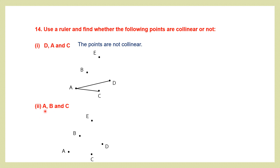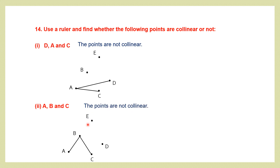Second set — A, B and C: place the ruler on A, draw a line to B, then from B to C. All three points are not on the same straight line, so these three points are not collinear.